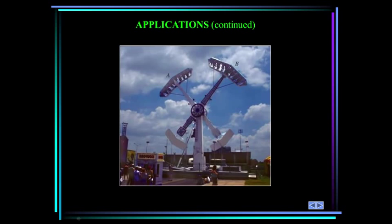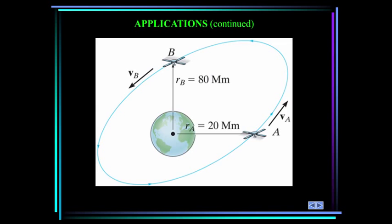Here's a ride at an amusement park. The hydraulically powered arms turn at a constant rate, which creates a centrifugal force on the riders. We need to determine the smallest angular velocity of cars A and B such that the passengers do not lose contact with their seat. Satellites are held in orbit about the Earth by using the Earth's gravitational pull as the centripetal force — the force acting to change the direction of the satellite's velocity. Knowing the radius of orbit of the satellite, we need to determine the required speed of the satellite to maintain this orbit.